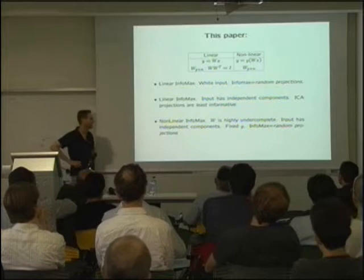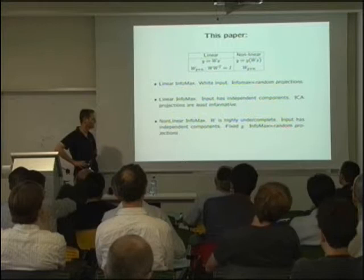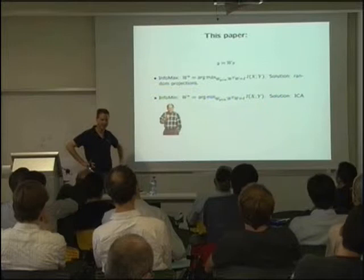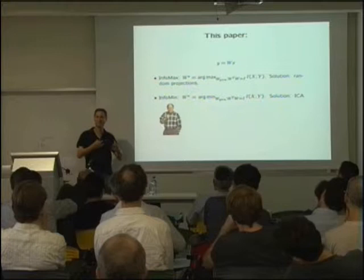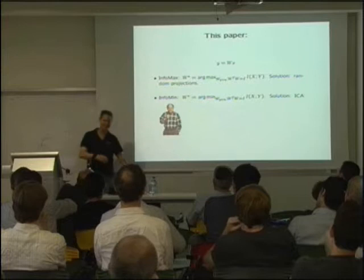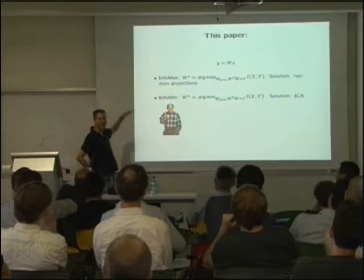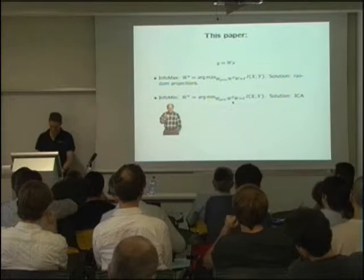One way to recap our results is in terms of a Seinfeld episode. There's one where George decides to do everything the opposite — he listens to what his gut instincts tell him and does the opposite, with tremendous success. In a way, our results show that ICA is like George Costanza. Instead of maximizing information, it's actually going in the exact opposite direction. You can actually get ICA by solving: find me an orthogonal projection that tells me the least amount of information about the input. That gives you ICA.